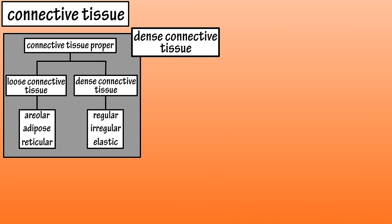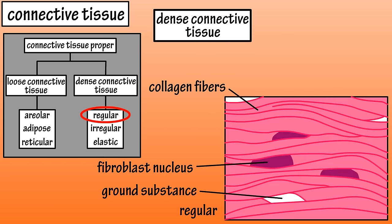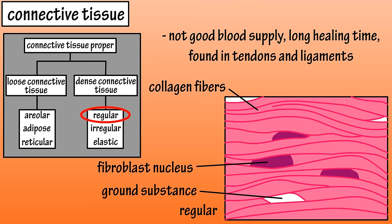Now for dense connective tissue, which also has three main types. Dense regular connective tissue consists of tightly packed parallel collagen fibers with a limited amount of ground substance, and fibroblast cells squeezed between the fiber layers. This tissue does not have a good blood supply, so when injured it takes a long time to heal. This tissue is found in tendons and ligaments, as it can withstand a lot of stress.